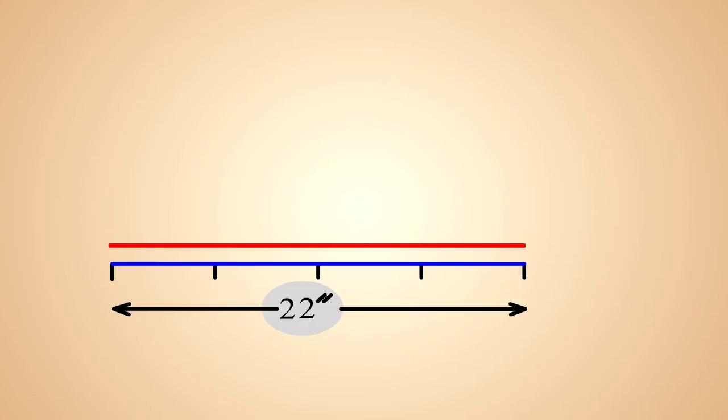To make our line exist as a two-dimensional object, let's say we need to make it one inch wide. Going back to perspective, we could half it until we can't measure anymore, but it will never reach zero, just like the two ends never meet.